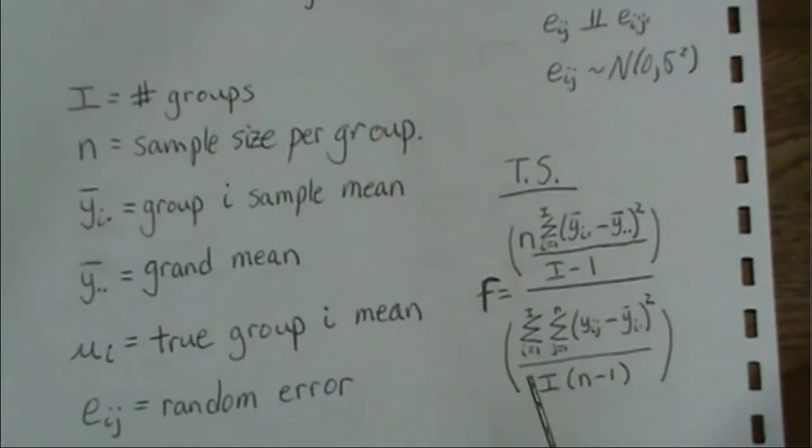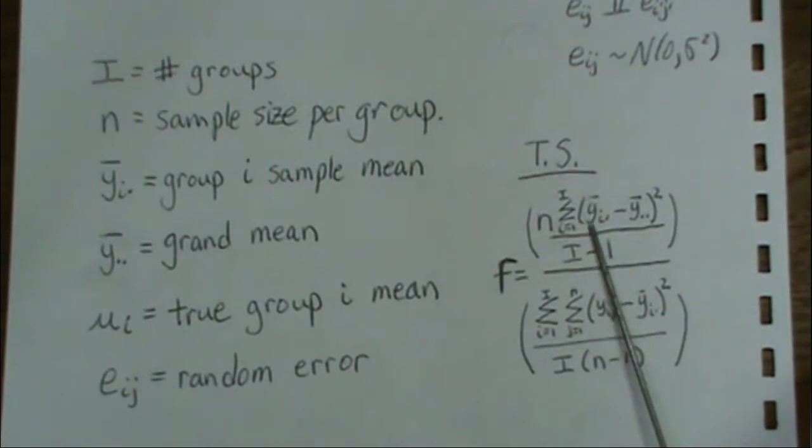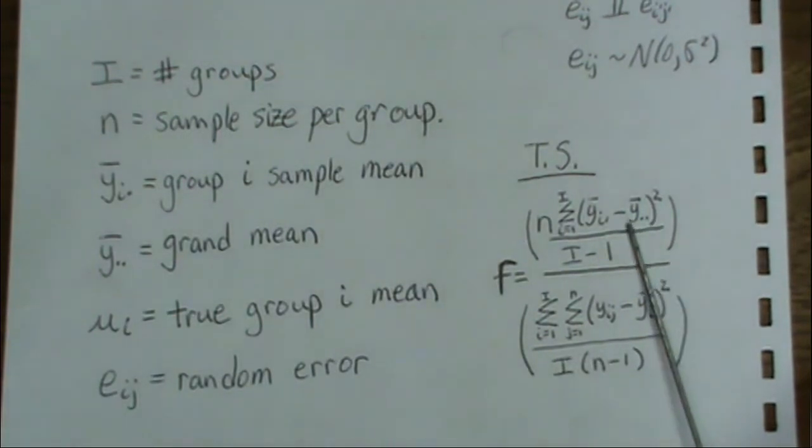When we look at this test statistic, we have this quantity here which is the group means, the sample group means. And this is the grand mean. And then it's over this, which is the data itself minus the group means. So this is called the within group variance, and this is the between group variance.